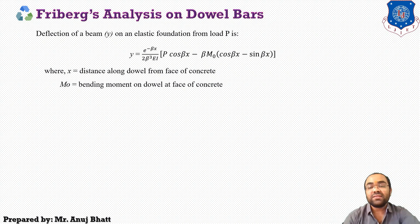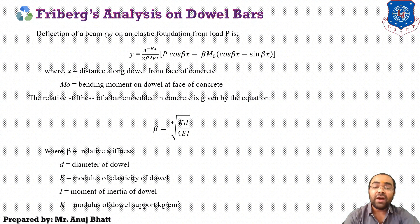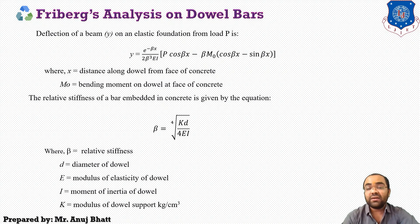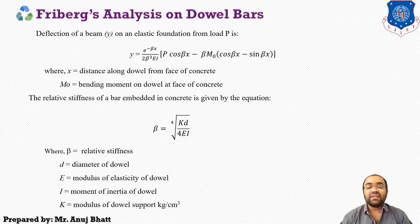Where X is the distance along the dowel bars from the face of concrete, and M0 is the bending moment on the dowel bars at the face of the concrete. The relative stiffness of a bar embedded in concrete is given by beta, which is the fourth root of the ratio K·D divided by 4EI, where K is the modulus of dowel support in kg/cm³, D is the diameter of the dowel bar, E is the modulus of elasticity, and I is the moment of inertia for the dowel bar.